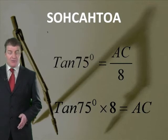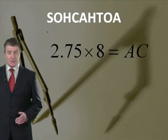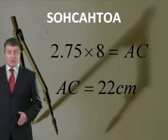Multiplying it out, you get 2.75 times 8 equals AC. Therefore AC equals 22cm.